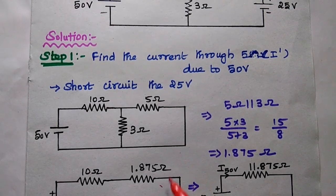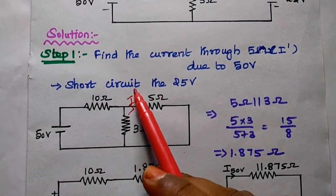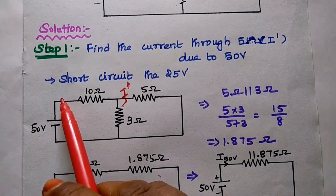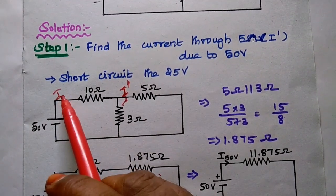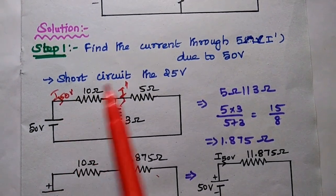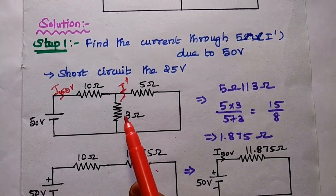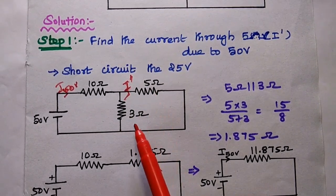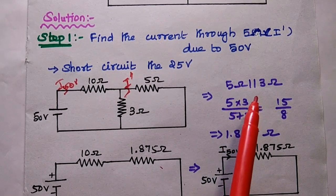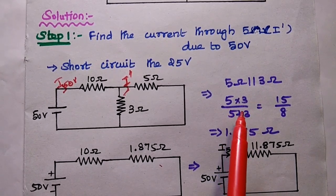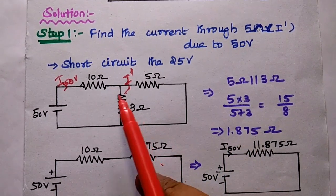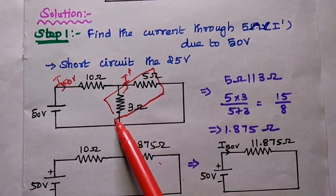Here we are going to find out the current I dash. We can simplify this diagram to find out the total current flowing through this circuit due to this 50 volt, that is I₅₀. Here this 5 ohm and 3 ohm — these two resistors are in parallel. We can simplify it using the parallel formula: 5 ohm in parallel with 3 ohm equals 5 times 3 divided by 5 plus 3, giving us 1.875 ohm, which replaces this parallel connection.